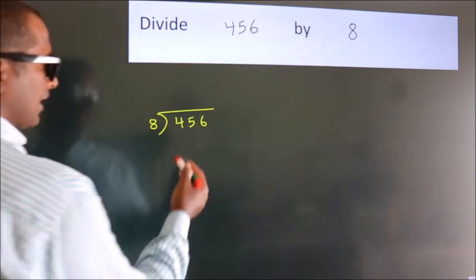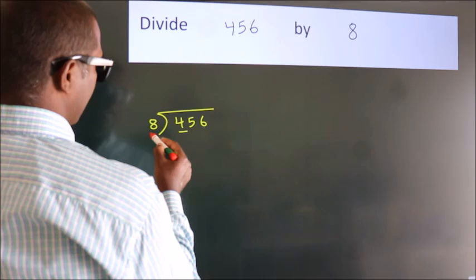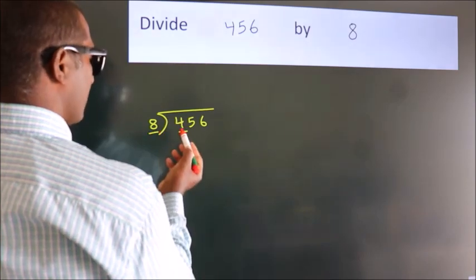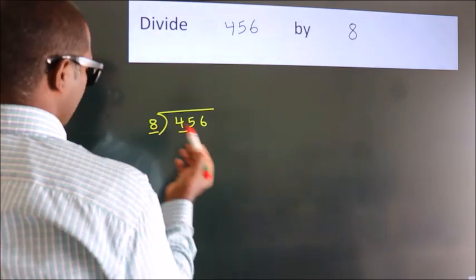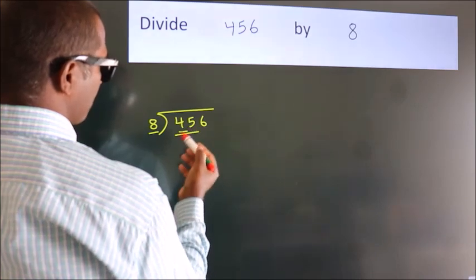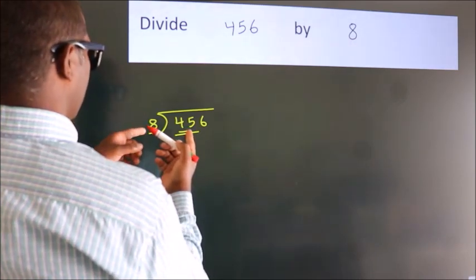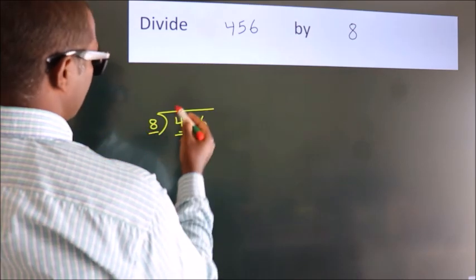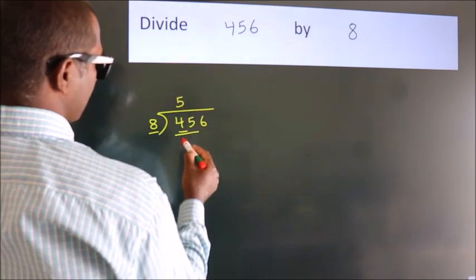Next, here we have 4, here 8. 4 is smaller than 8, so we should take 2 numbers: 45. A number close to 45 in the 8 table is 8 fives, 40.